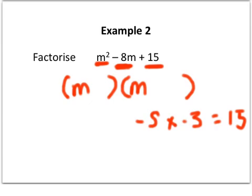Minus 5 times minus 3, minus times minus is positive, which gives you 15. But then if you do minus 5 add minus 3, you get exactly what you're looking for, which is the minus 8.